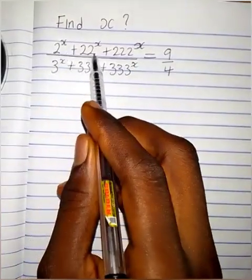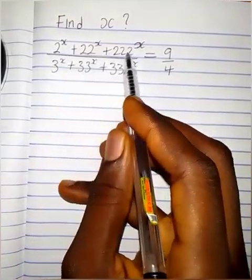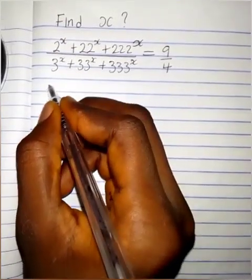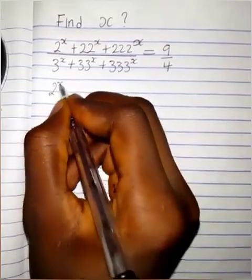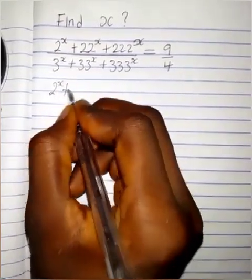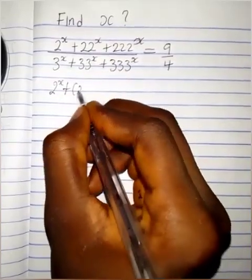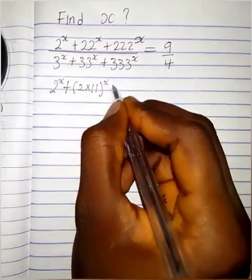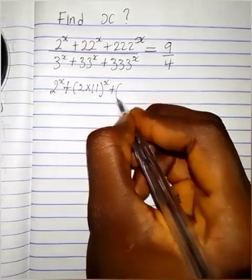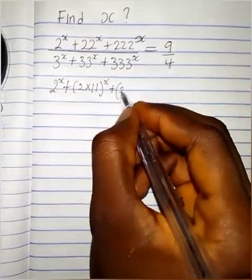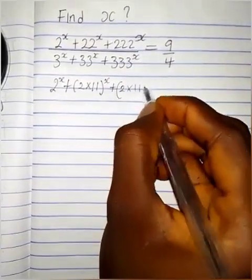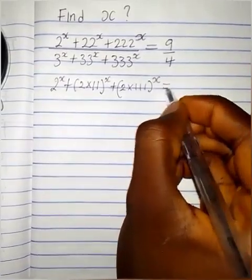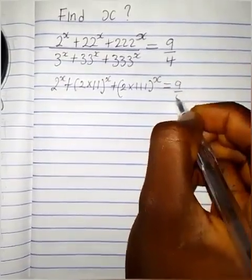We have 2 raised to the power x+22 over 2 raised to the power x+222, which equals 9 over 4. Let's take it step by step. 2 raised to the power x+22 can be written as (2 times 11) raised to the power x, and 2 raised to the power x+222 can be written as (2 times 111) raised to the power x, which equals 9 over 4.